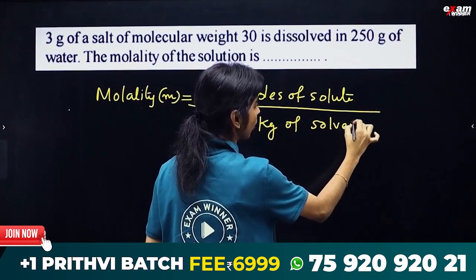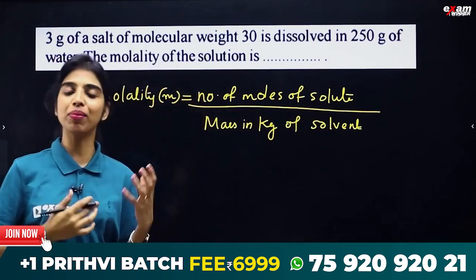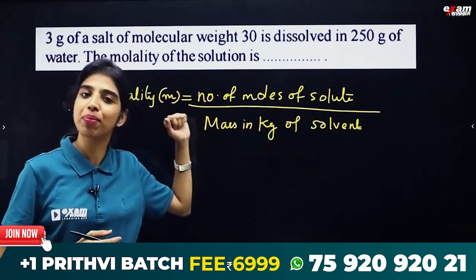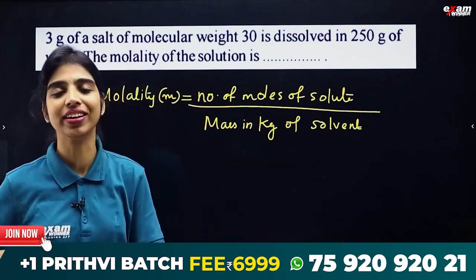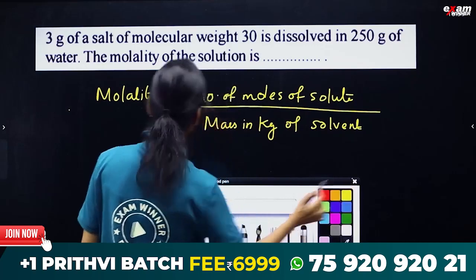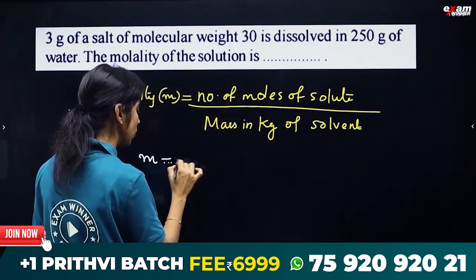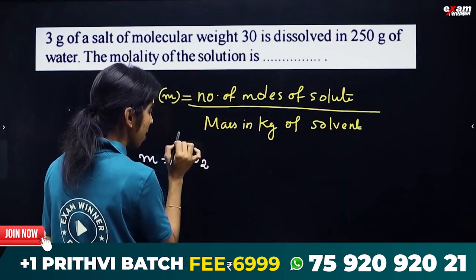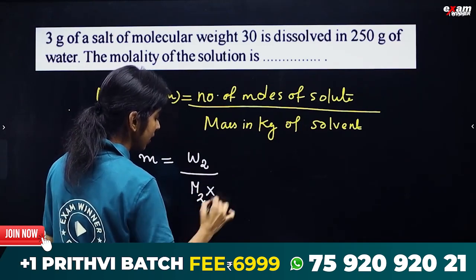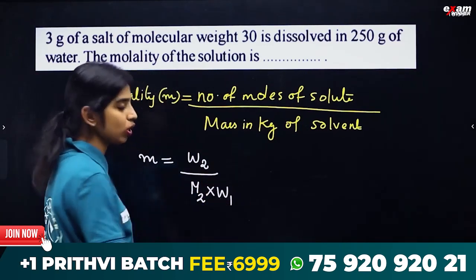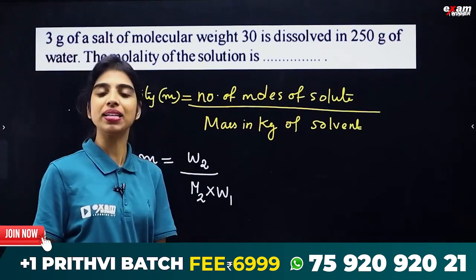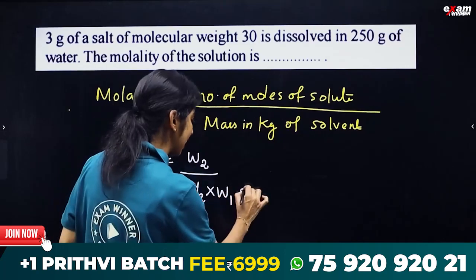Mass in kilograms of solvent — so this is the equation. The number of moles of solute divided by mass in kilograms of solvent. What is the molality? The molality is equal to W2, that is mass of solute divided by molecular mass of solute, into W1. W1 is the amount of solvent in grams.